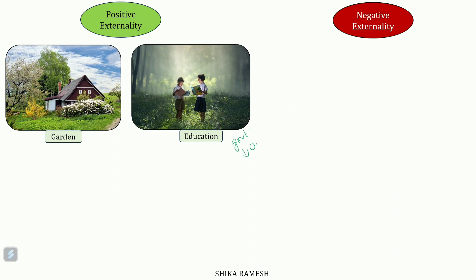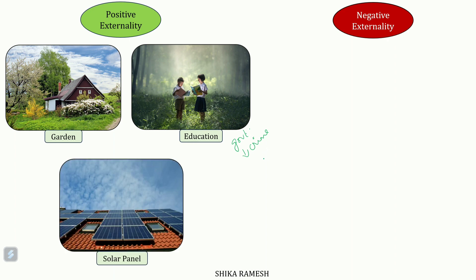A more educated population tends to mean lower crime rates and also higher labour productivity. Again, if solar panels are installed in all homes, it reduces the carbon emissions from electricity generation from other sources such as coal and fossil fuels, and helps to reduce its impact on climate change. So these are all examples of positive externality.